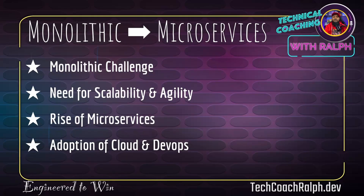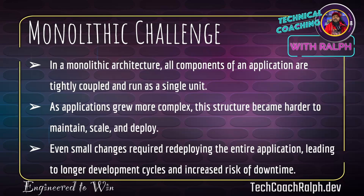Let's talk about the evolution from monolithic to microservices. Monolithic used to be where it was at, and now we're moving more towards microservices. What is the monolithic challenge? In a monolithic architecture, all components of an application are tightly coupled and run as a single unit. As applications grew more complex, this structure became harder to maintain, scale, and deploy.